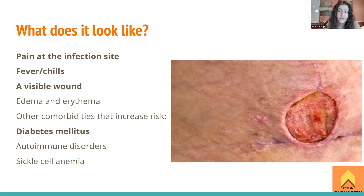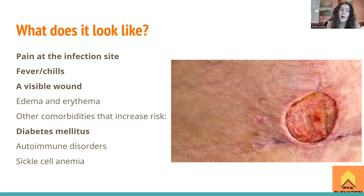Comorbidities that increase the risk of developing osteomyelitis — diabetes mellitus is the big one. With diabetes, you're more likely to get a neuropathic ulcer because decreased sensation, especially in the periphery, means you may not notice a wound forming. Additionally, diabetics have poor blood perfusion to tissues, leading to very poorly healing wounds. If a wound is not healing, it stays open to the environment and is more susceptible to infection.